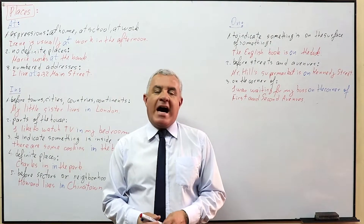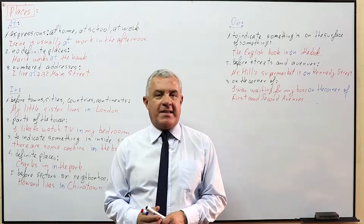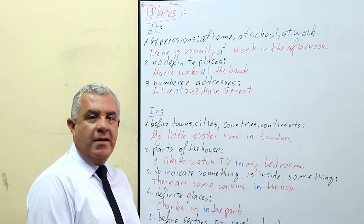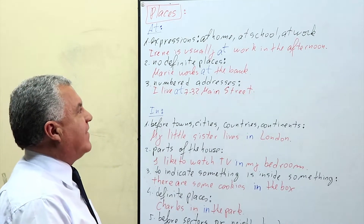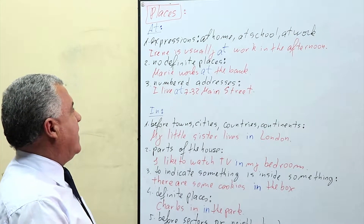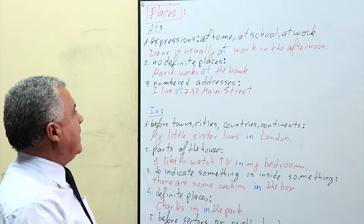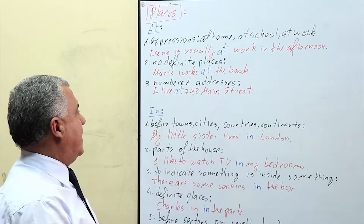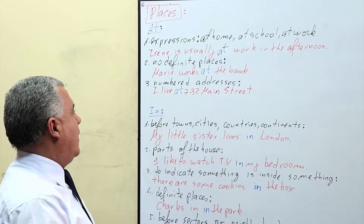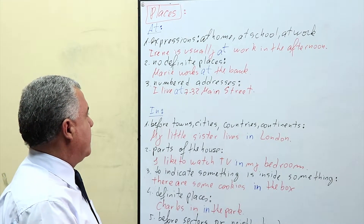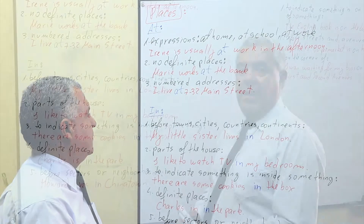This time I want to teach about 'at', 'in', and 'on' plus places. Let's begin. 'At' is used with expressions such as 'at home', 'at school', 'at work'. For instance, Irene is usually at work in the afternoon. Another use of 'at' is with non-definite places — for example, Mary works at the bank. Number three: 'at' is used with numbered addresses — for instance, I live at 732 Main Street.